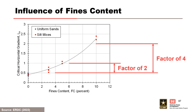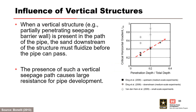The Engineer Research and Development Center investigated the influence of fines on critical horizontal gradient. At a fines content of 5%, the critical horizontal gradient is doubled; at a fines content of 10%, it is quadrupled — this influence is significant and could have major implications on risk assessments. When a vertical structure such as a partially penetrating seepage barrier wall is present in the pipe path, the sand downstream must fluidize before the pipe can pass. The overall gradient required to pass a structure is usually higher than gradients required for initiation and progression without the structure.